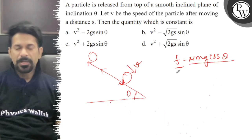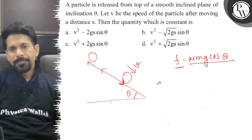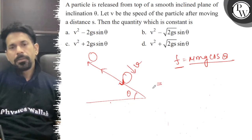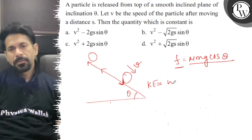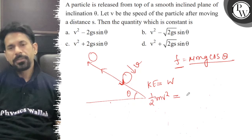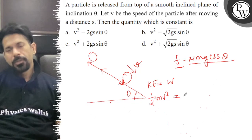So we can say the change in kinetic energy is nothing but the work done. So half mv squared is the change in kinetic energy, equal to work done due to gravity and due to friction.